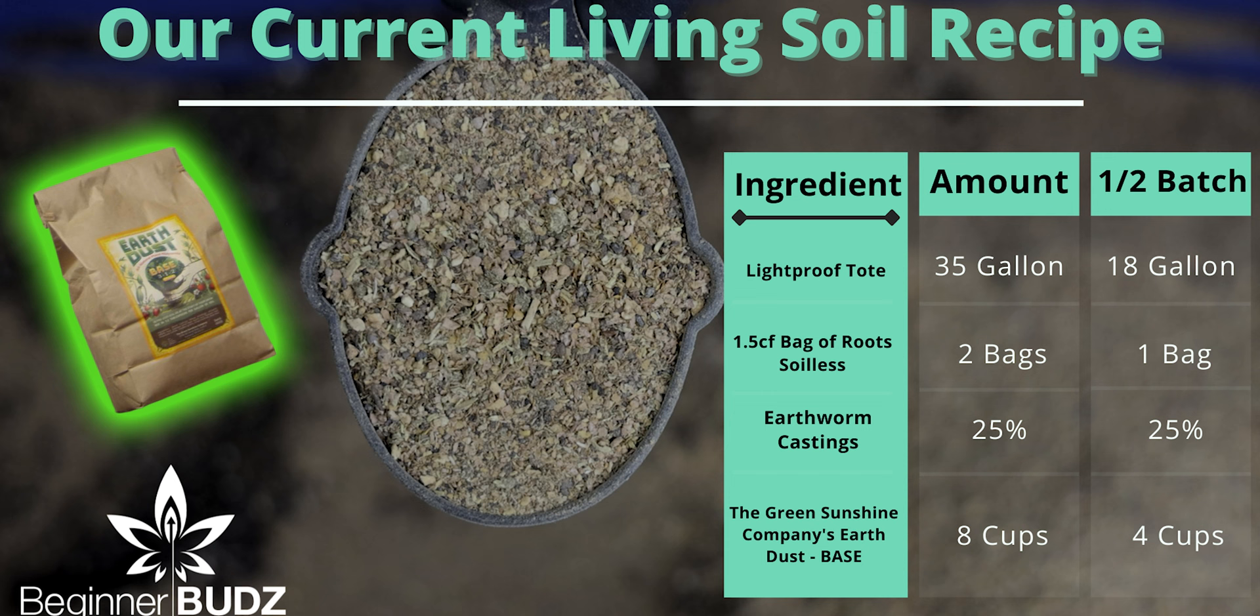To cut that down, it'd be one bag of root soilless. You'd still have 25% earthworm castings and four cups of base. This should get you about four pots. Likewise, our mix uses two bags of cocoa. Gets you about eight. We're hoping to have a perpetual grow going, so we knew we'd need more rather than less. But the amount you choose is up to you. Just keep the ratios the same.